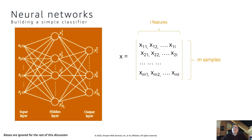To go from input to output we need data. We put a dataset in a matrix called X. Each row represents a sample and each column represents a feature. So x11 is the first feature of the first sample, x12 is the second feature of the first sample. We need to have as many neurons on the input layer as we have features — sizing the input layer is straightforward. You need the same number of neurons as features, which is L.